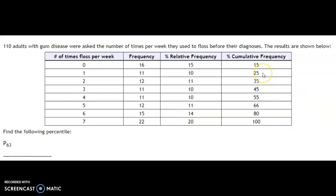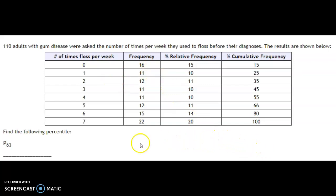Similarly, the 25th percentile would be 1.5, and the 80th percentile would be 6.5. So if you're asked for exactly a boundary percentile, you go between the two classes. But if it falls within a class — like 63 falls inside five times per week — you just report that class value. For example, the 32nd percentile would be two times per week. I hope that explains finding percentiles from frequency distributions a little better.